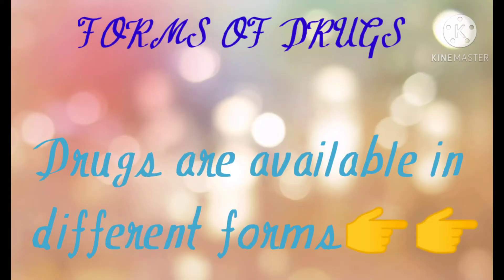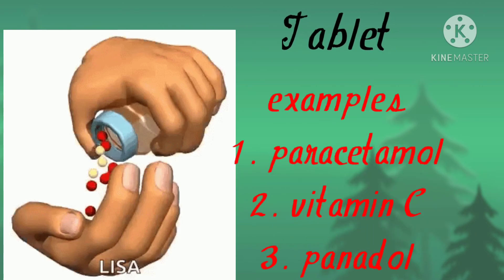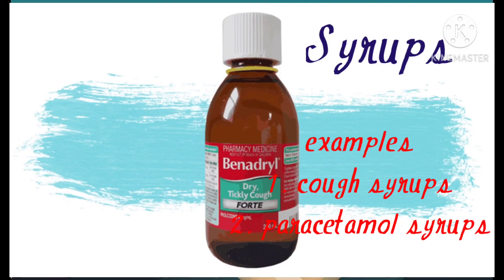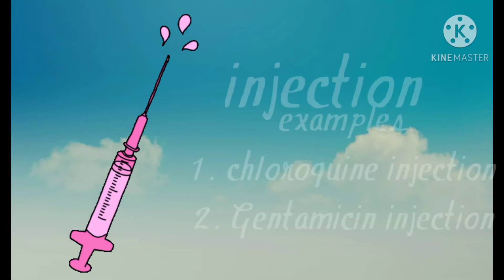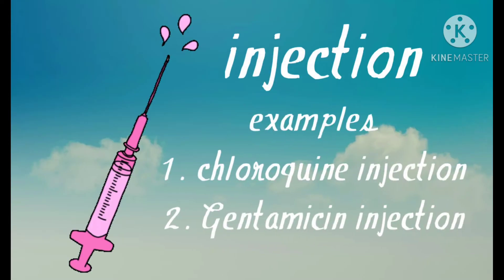Drugs come in different forms. We have tablets — for example, paracetamol and vitamin C. We have syrups — for example, cough syrup and paracetamol syrup. And we have injections — for example, chloroquine injection and gentamicin.